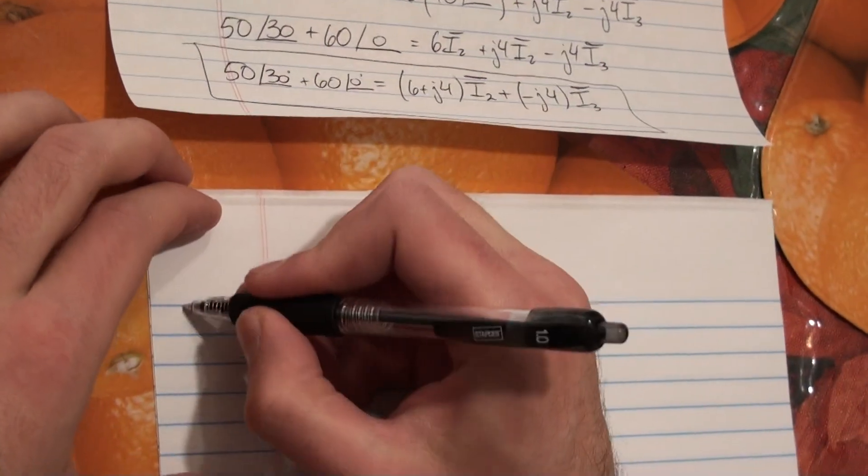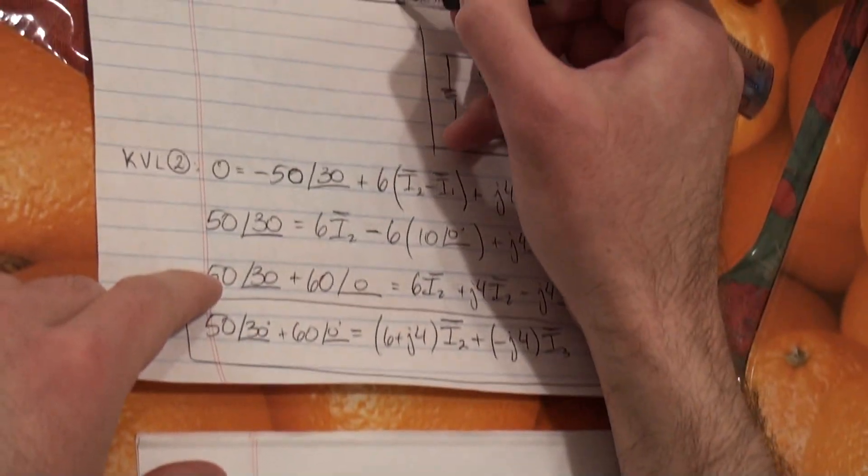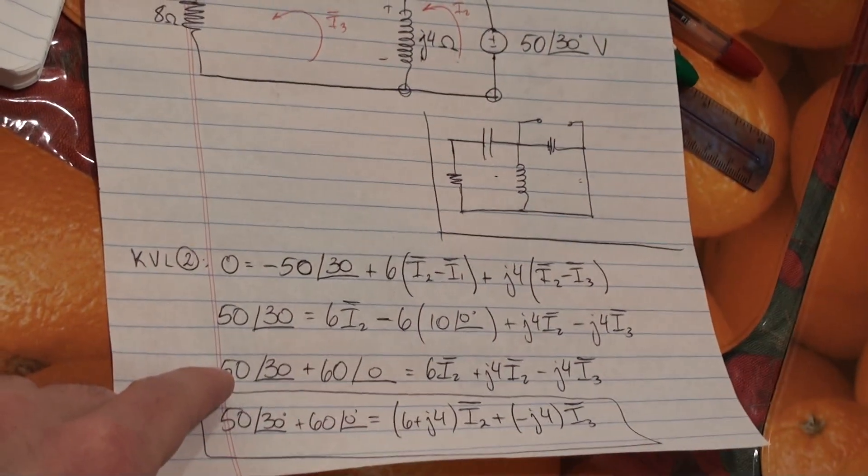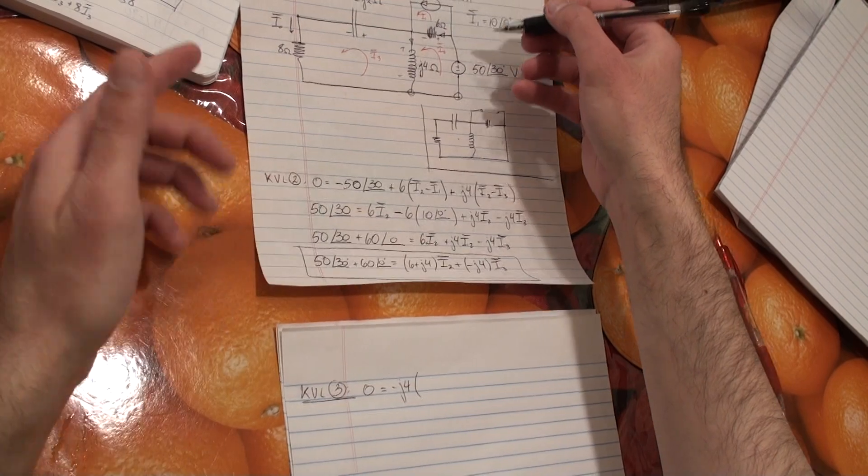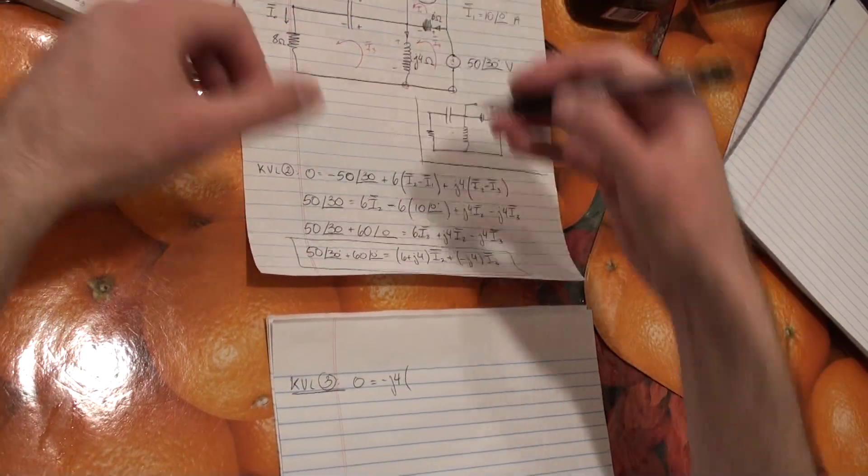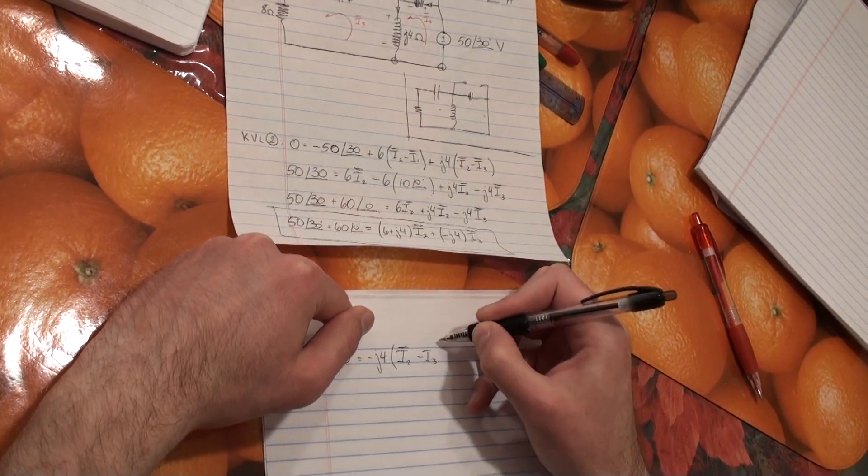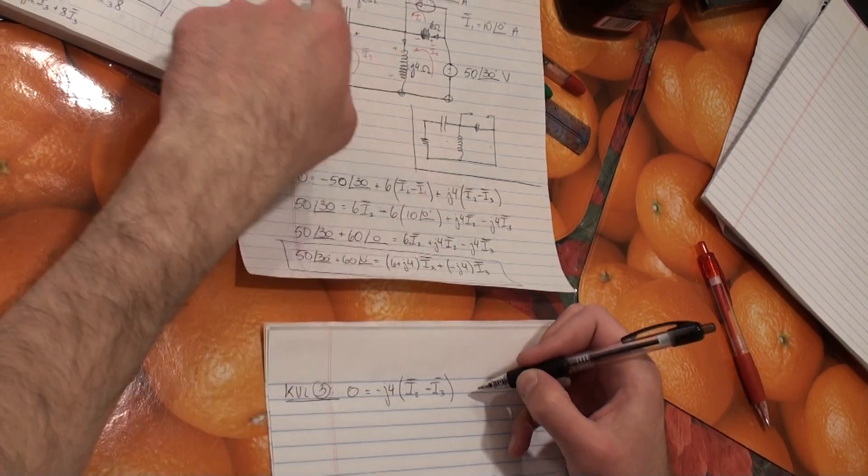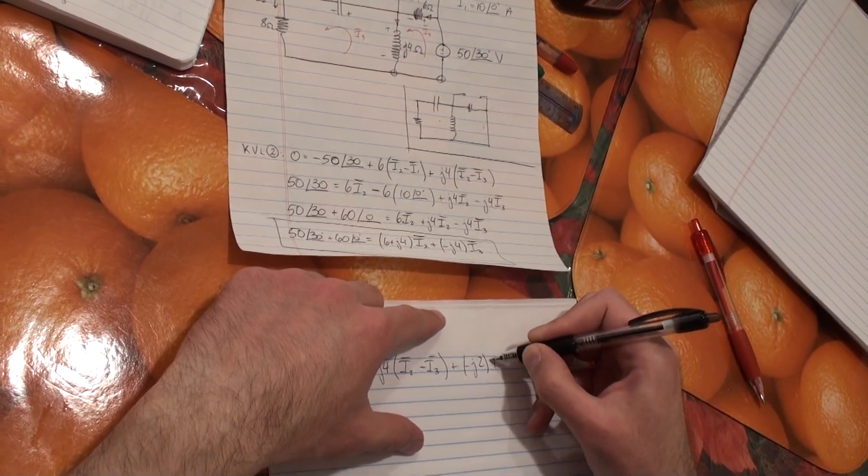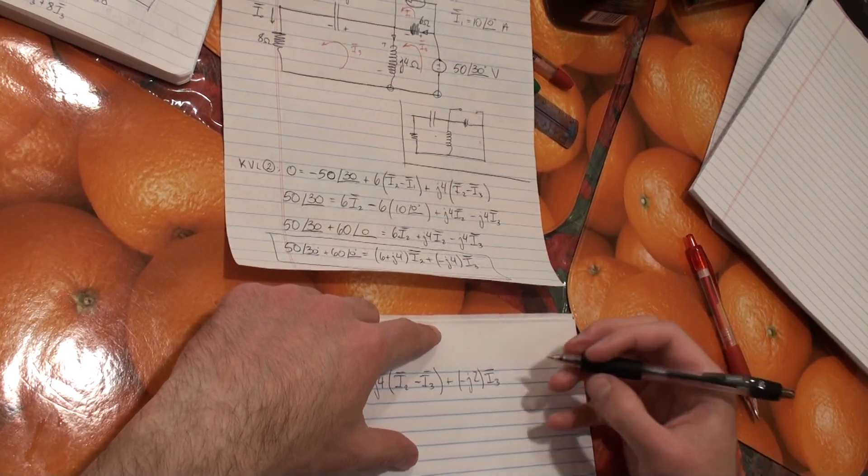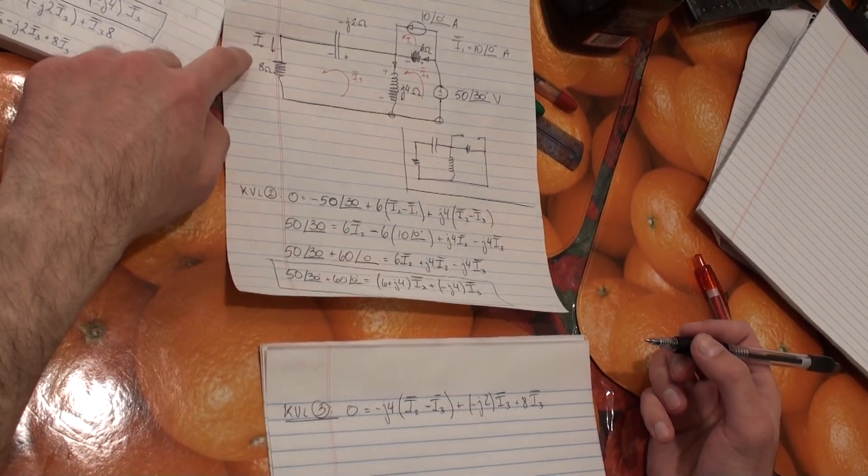So now we write KVL in the third mesh. So it's going to be 0 equals, and I'm going to start over here. So it's going to be minus J4. Now remember, we chose the current going down, and that current was going to be the sum of I2 and I3. But because the current is going down, it's I2. And then I3 is going against the direction of the current that we chose, so it's minus I3. Then we have the capacitor, and that's going to be minus J2 times I3. And then you're going to get the resistor, which is going to be 8 I3.